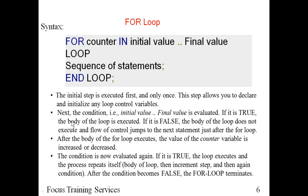Now in the next step, the condition — that is the initial value and the final value — is evaluated. If it is true, the body of the loop is executed. When this condition is true, the body of the loop executes. Otherwise, it jumps to the next statement if it is false.